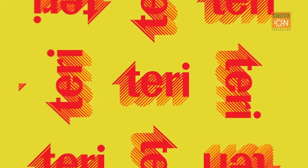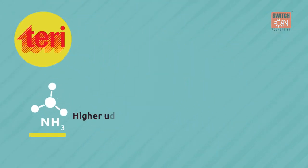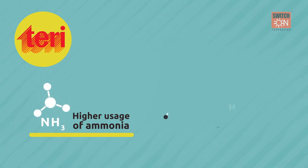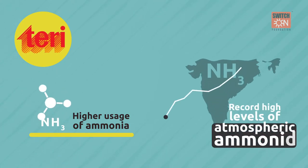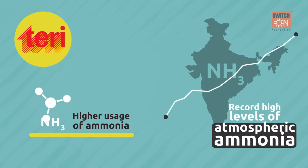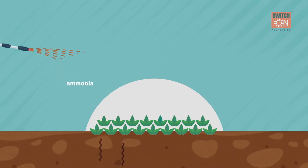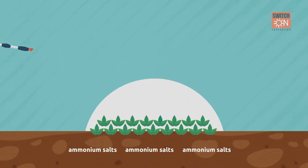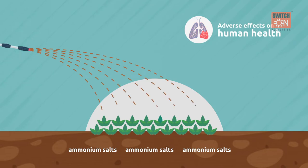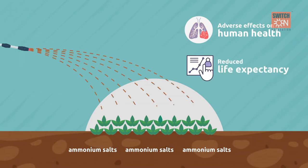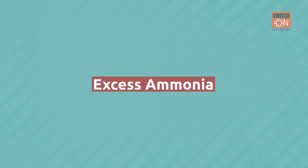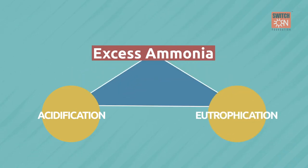According to TERI, higher usage of ammonia resulted in record high levels of atmospheric ammonia across India. Ammonia, which is used in agriculture, vastly breaks down into fine ammonium salt, causing adverse human health effects and reduced life expectancy. Excess ammonia in the environment also contributes to acidification and eutrophication.